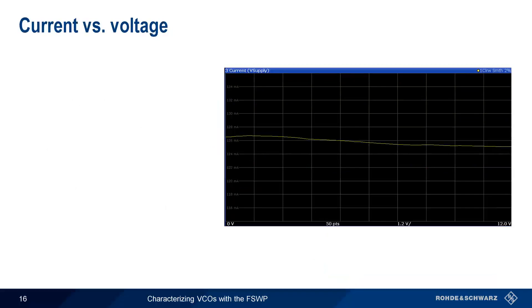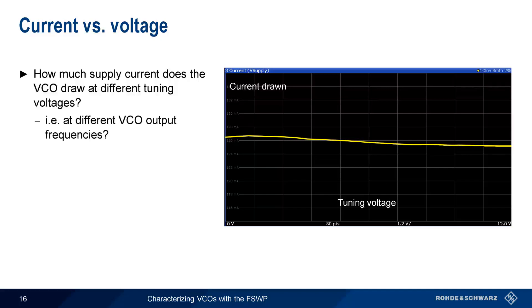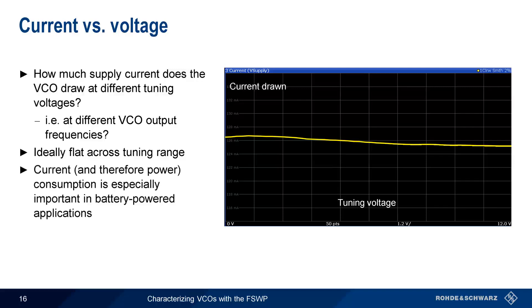The current versus voltage measurement answers the question: how much supply current does the VCO draw at different tuning voltages? Since output frequency is almost entirely a function of tuning voltage, this plot also approximates current consumption as a function of VCO output frequency. Ideally the current consumption should be flat across the tuned voltage range. For a given supply voltage, higher current means higher power consumption, so this measurement is particularly useful when characterizing battery-powered VCOs.